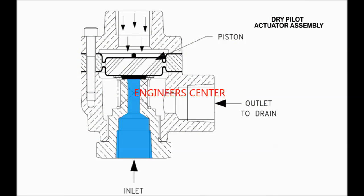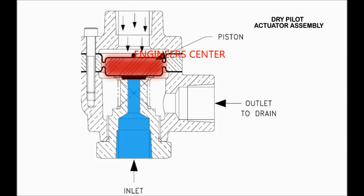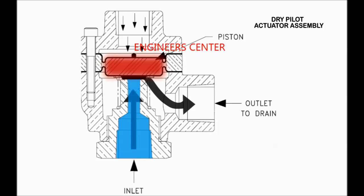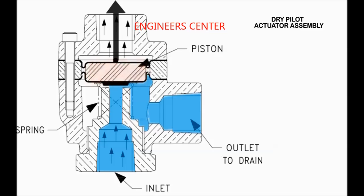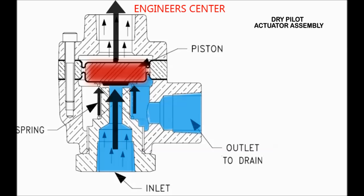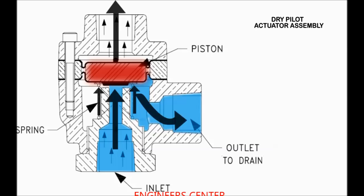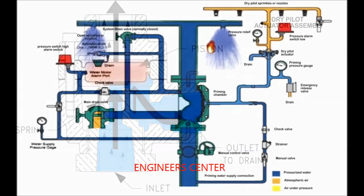Here is a diagram explaining the internal operation of the dry pilot actuator. In the shown figure, the valve is in the closed position where pressurized air on the piston and diaphragm assembly works as a seal between the inlet and the outlet of the valve. When activated, the pressurized air above the piston is released, and the water pressure together with the spring force pushes the piston and the diaphragm assembly upwards, allowing water to pass from the inlet to the outlet drain, consequently depressurizing the priming chamber pressure and activating the deluge system.